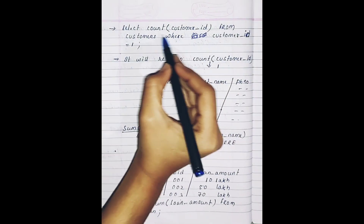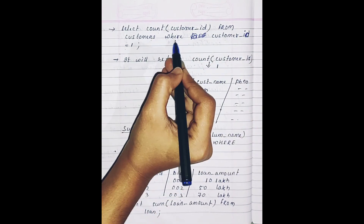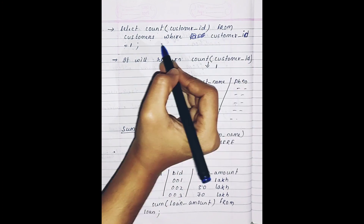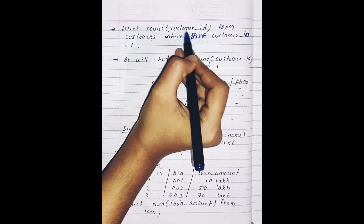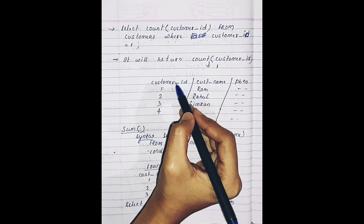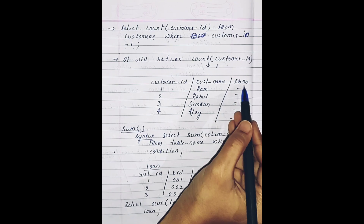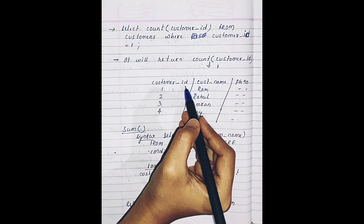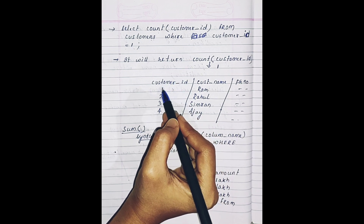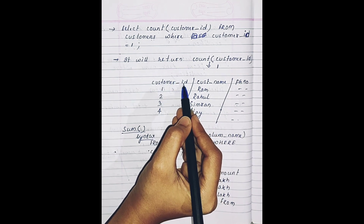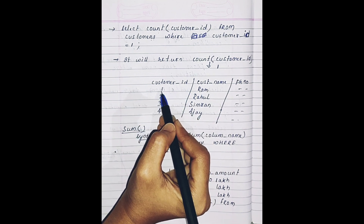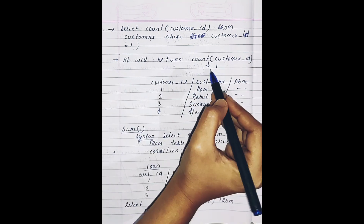Now consider the query: SELECT COUNT(customer_id) FROM customers WHERE customer_id = 1. Here we are specifying a condition — count the customer ID from the customer table where customer ID equals one. In this customer table, there is only one record with customer ID equal to one, so it will return only one.